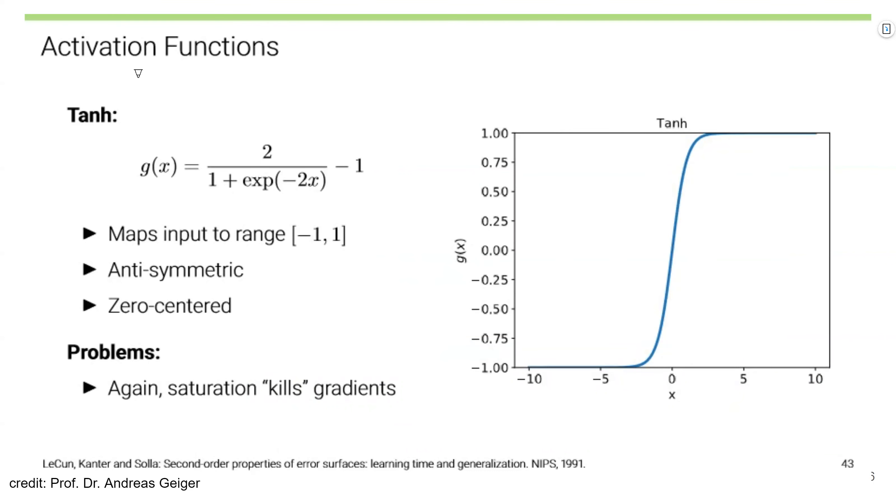Another activation function is hyperbolic tangent. It looks like this: 1 plus exponentiation minus 2x to minus 1. The values are between minus 1 to 1, meaning that it is zero centered. However, another of the same problem as the sigmoid function is that saturation kills gradients. It has the same problem.